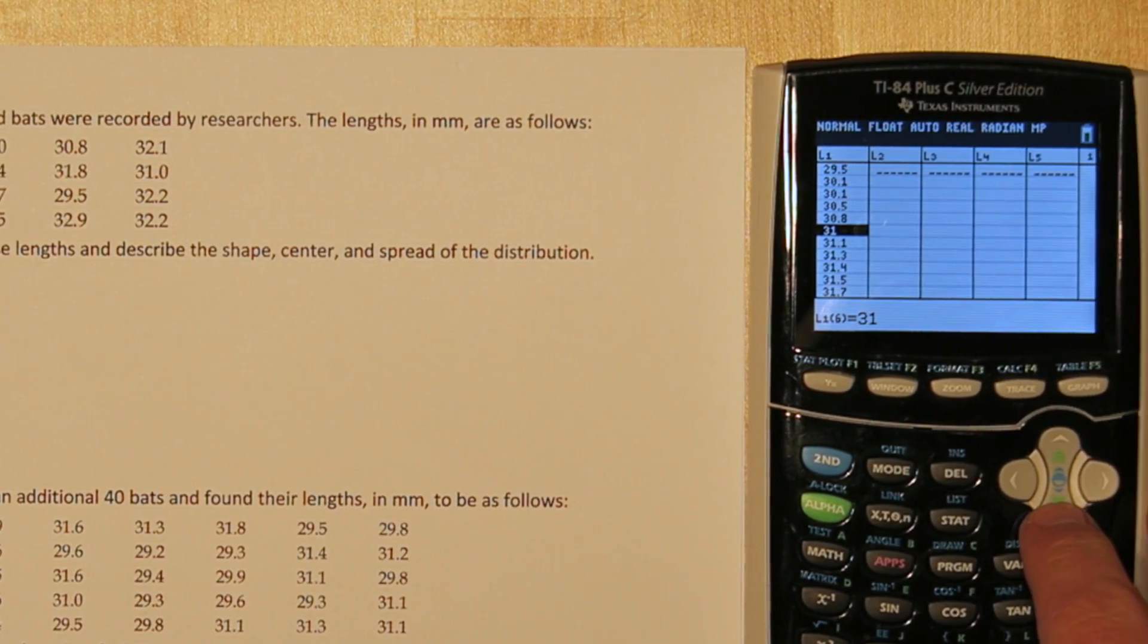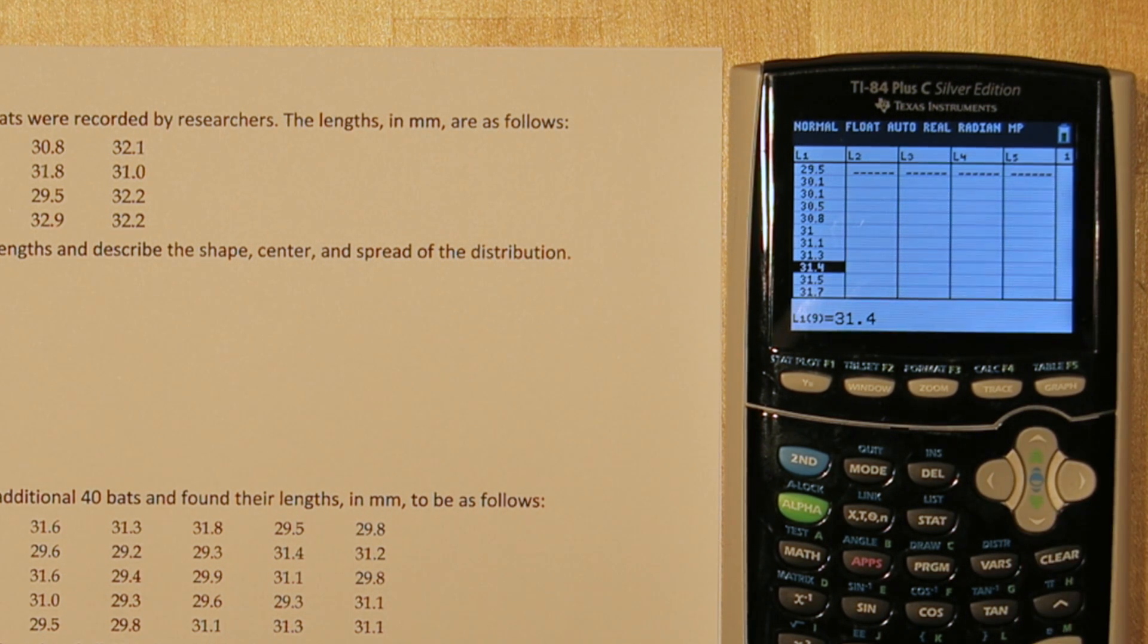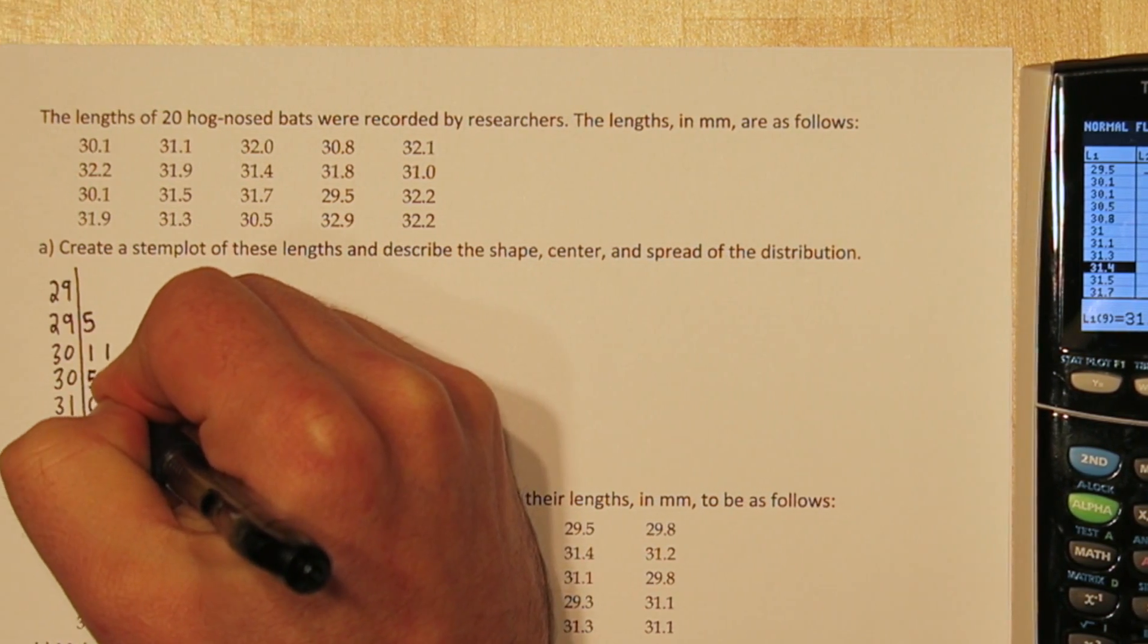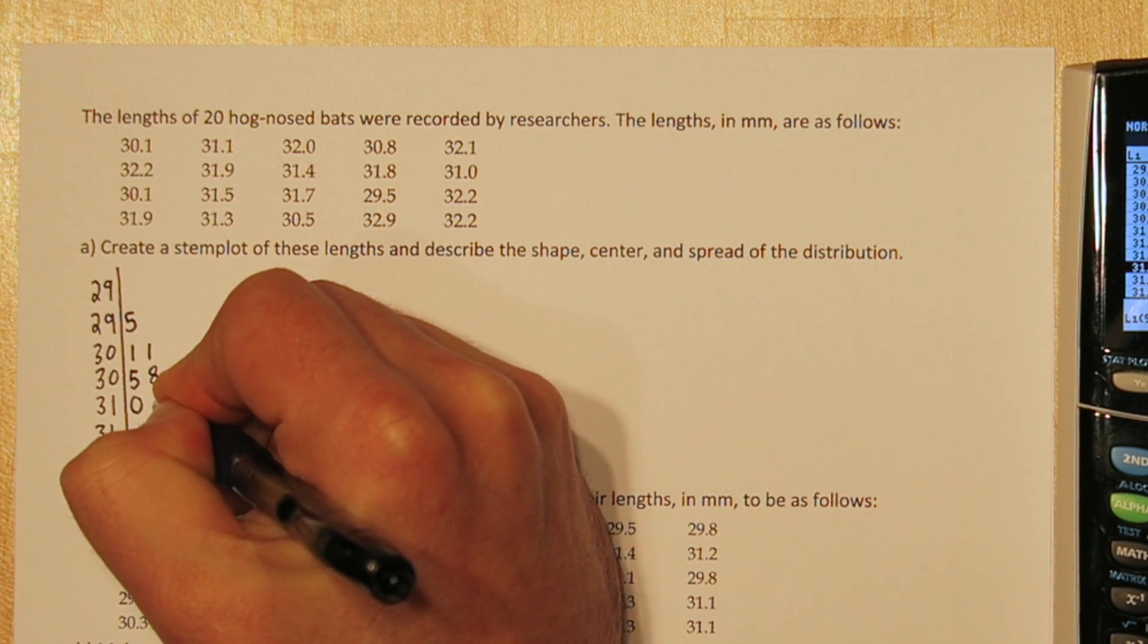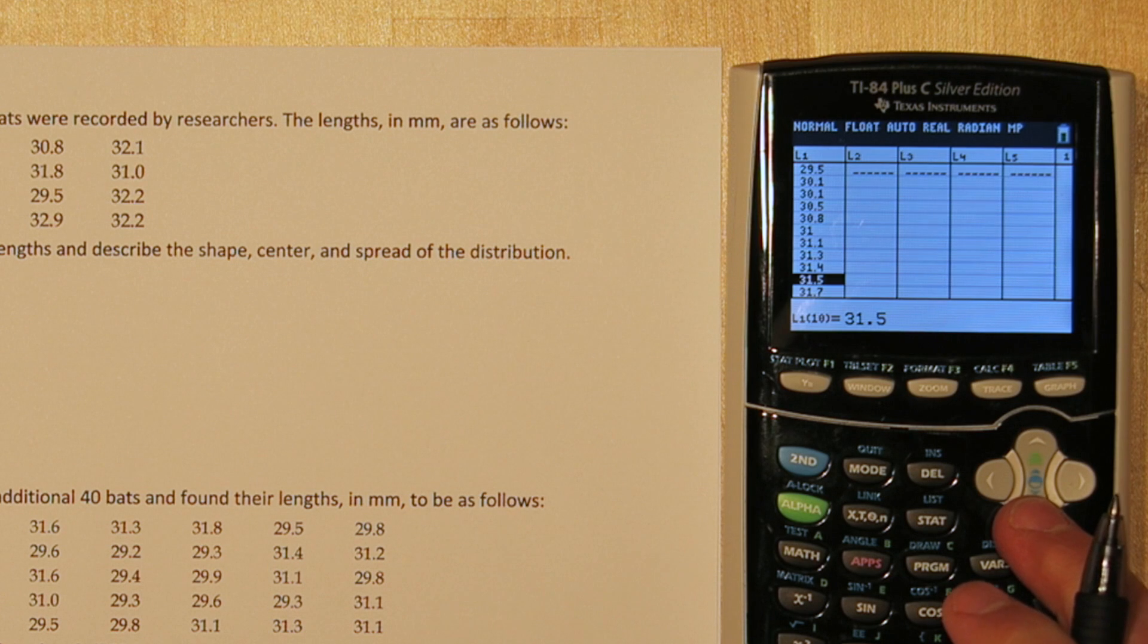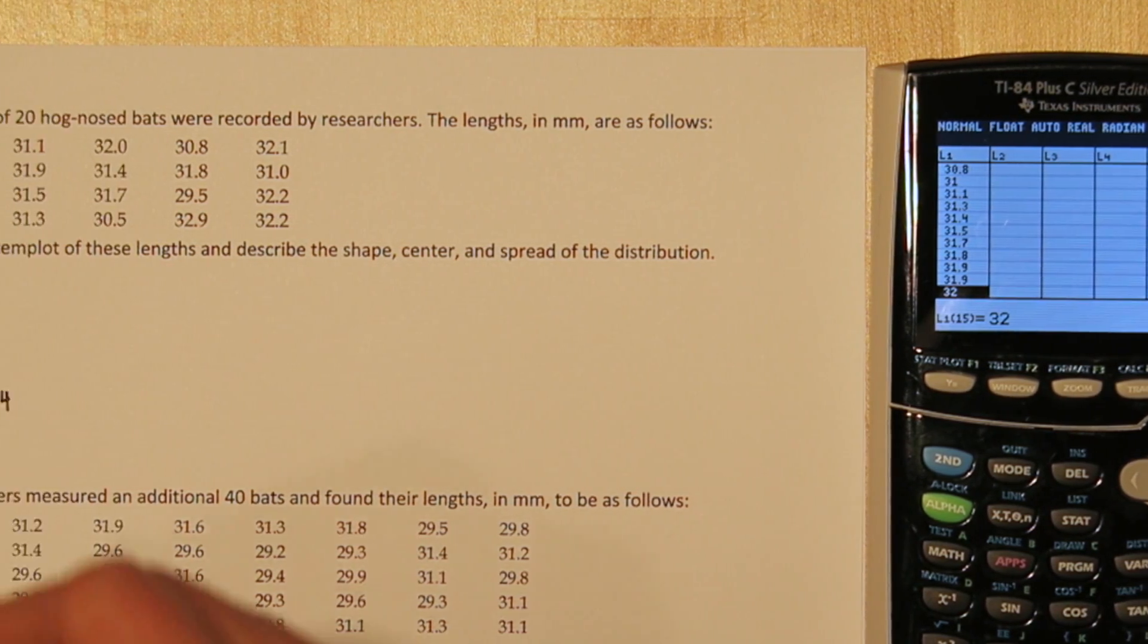Now we have 31.0, 31.1, and 31.3, and 31.4. All of those go in the first 31 stem. For the second 31 stem, we have 31.5, 31.7, 31.8, 31.9, another 31.9, and that's it.